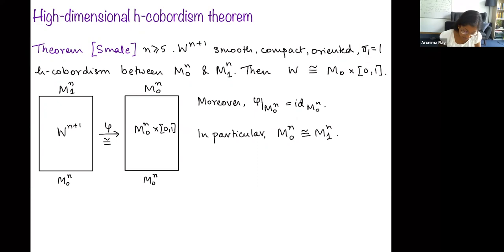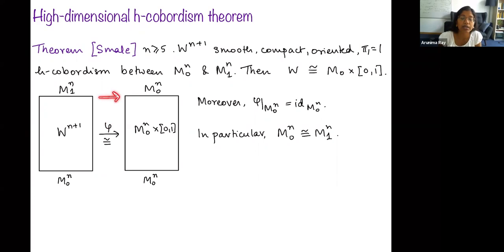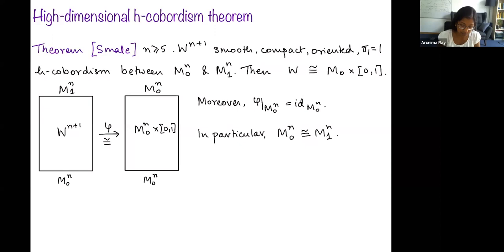Smale's result tells you that the h-cobordism is actually diffeomorphic to the product M0 × [0,1]. Moreover, there is a diffeomorphism φ from the h-cobordism to the product, whose restriction to the bottom boundary component M0 is the identity map. The restriction to the top boundary component gives a diffeomorphism from M1 to M0. So in particular, the h-cobordism theorem tells you that h-cobordant, smooth, compact, oriented, simply connected n-manifolds are diffeomorphic, when n ≥ 5.